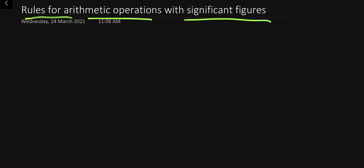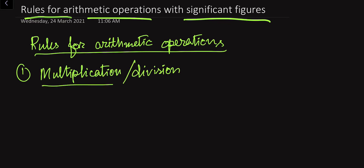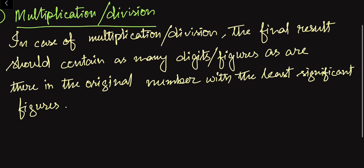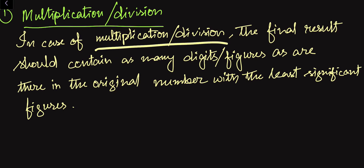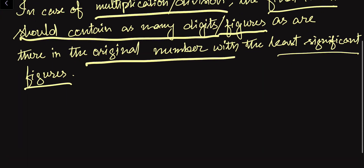In the first case we will see multiplication or division. The rule is: in case of multiplication or division, the final result should retain as many significant figures as there are in the original number with the least significant figures among the numbers on which we are doing the operation.